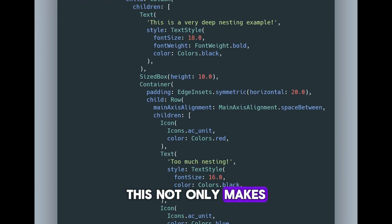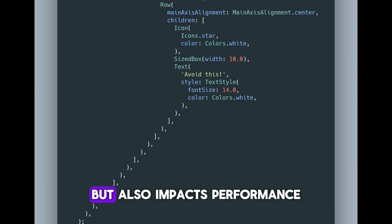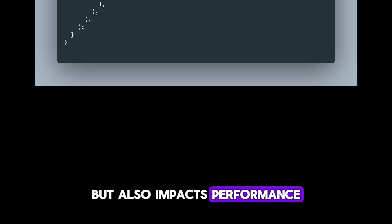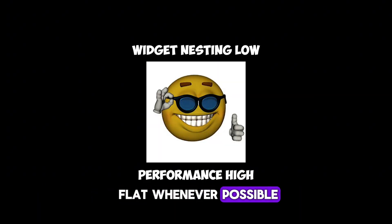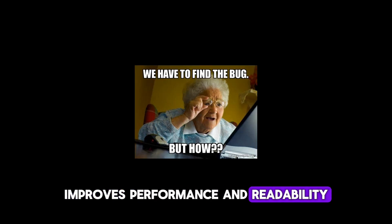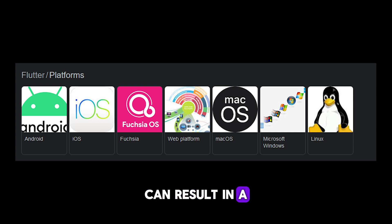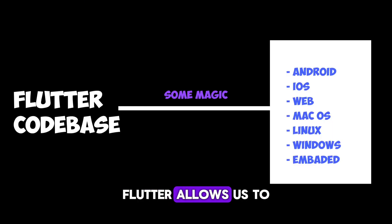Number three: overly nesting widgets can degrade performance. Picture a widget tree with deep levels of nesting — this not only makes the code harder to maintain but also impacts performance. Keeping your widget tree flat whenever possible improves both performance and readability.